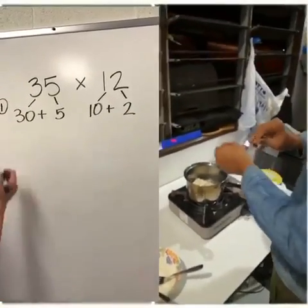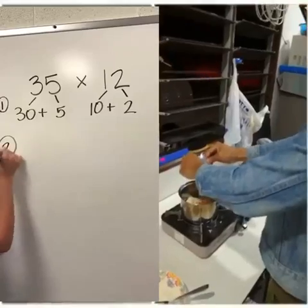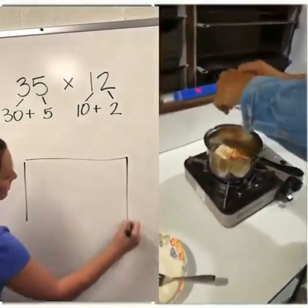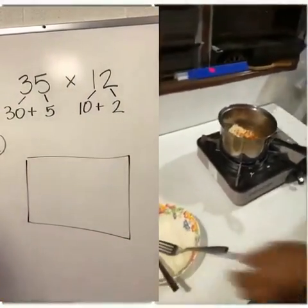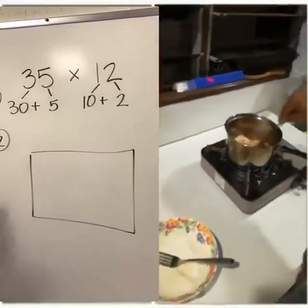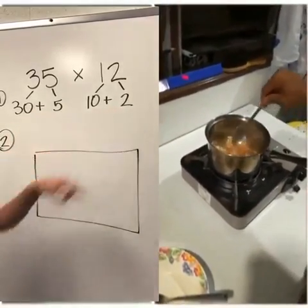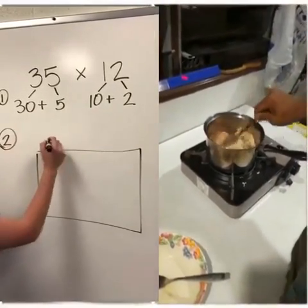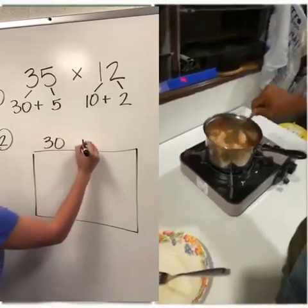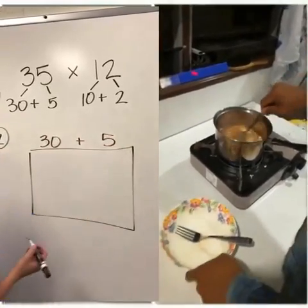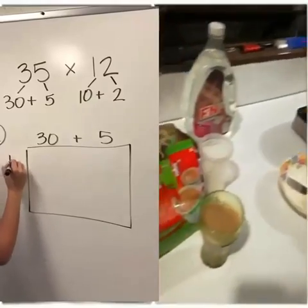The next step would be to draw a large box. Okay, and on this box we're gonna put both of our expanded numbers. So on the top I'm gonna put 30 plus 5 and on the side I'm gonna put 10 plus 2.